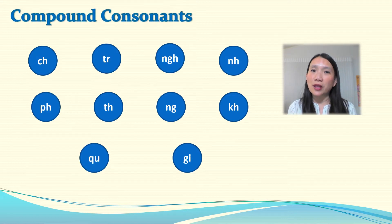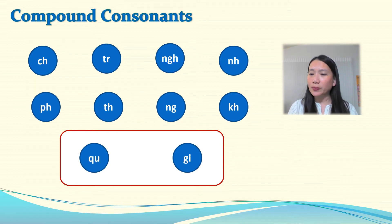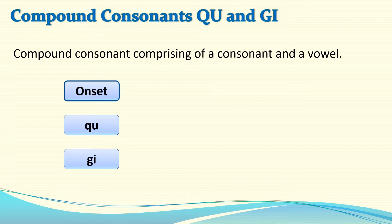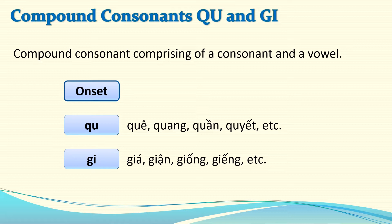There are many compound consonants in Vietnamese, and most are easy to spot because they are combinations of consonants. However, two cases are challenging: the compound consonants QU and GI. These are challenging because they consist of one consonant and one vowel. When a compound consonant consists of one consonant and one vowel, that vowel also belongs to the onset because it is part of the compound consonant. So these are the two compound consonants you must memorize in Vietnamese.